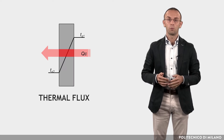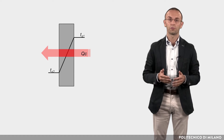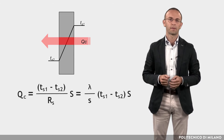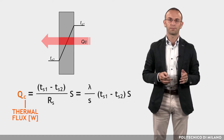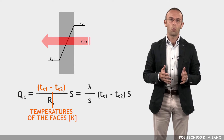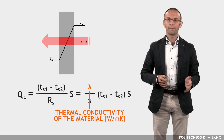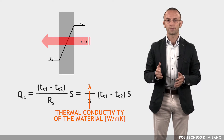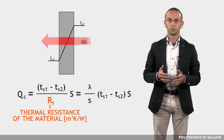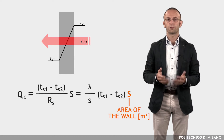The thermal flux Qc, which is the amount of heat transferred per unit of time by conduction through a homogeneous wall of area S and of thickness S, is calculated by this formula. Where Qc is the thermal flux expressed in Watts; TS1 and TS2 are the temperatures of the phases 1 and 2 in Kelvin; S is the thickness of the plate or wall in meters; S is the thermal conductivity of the material in Watts per meter Kelvin; S is the thermal resistance of the material constituting the wall in square meter Kelvin per Watt; and S is the area of the wall in square meters.